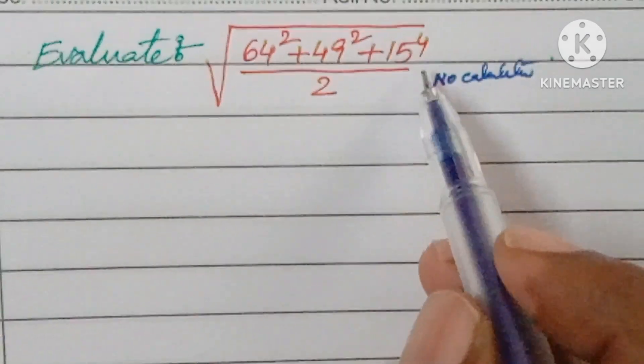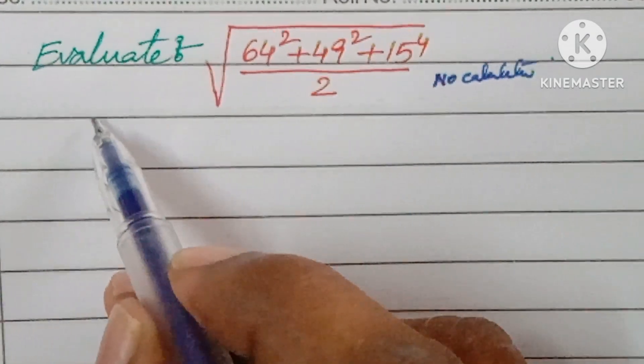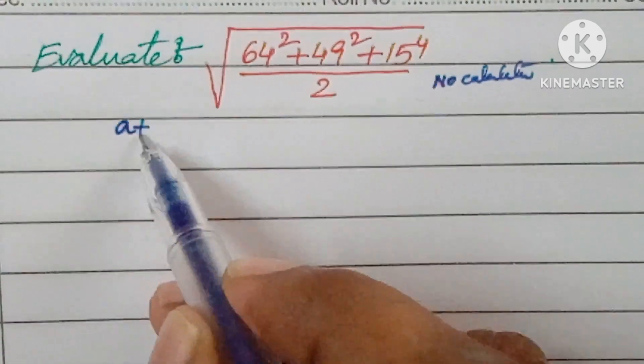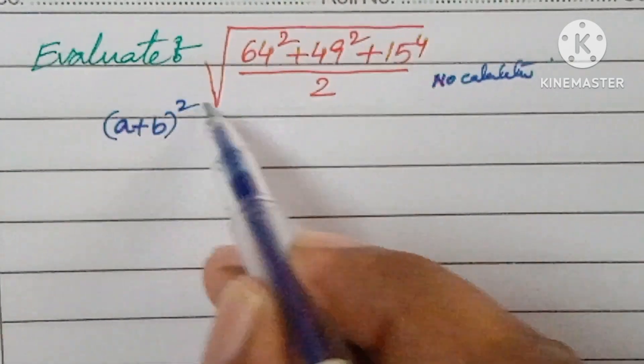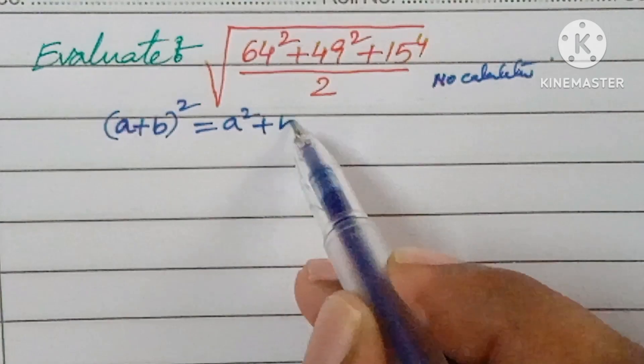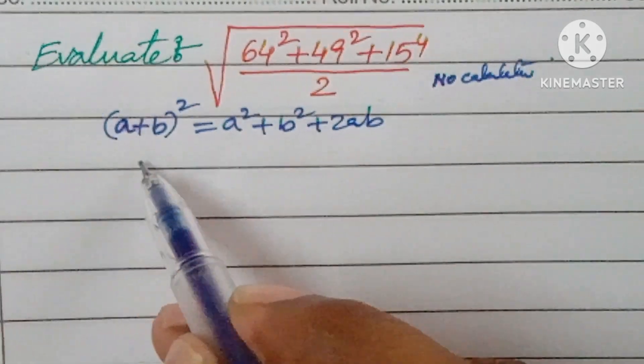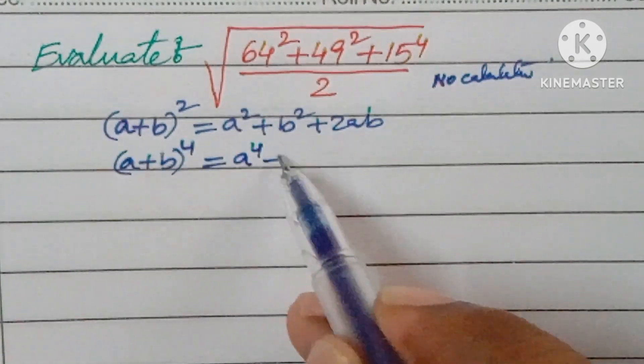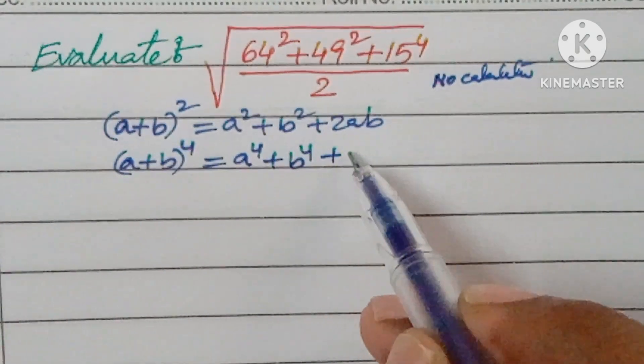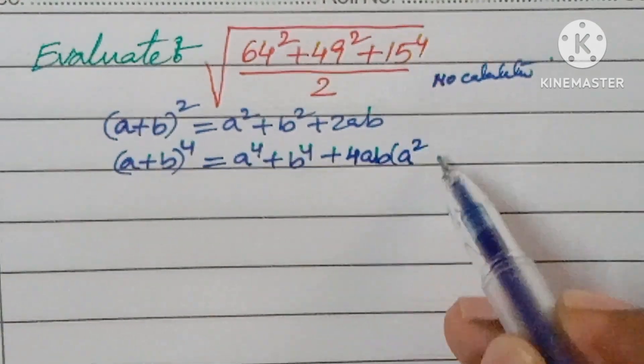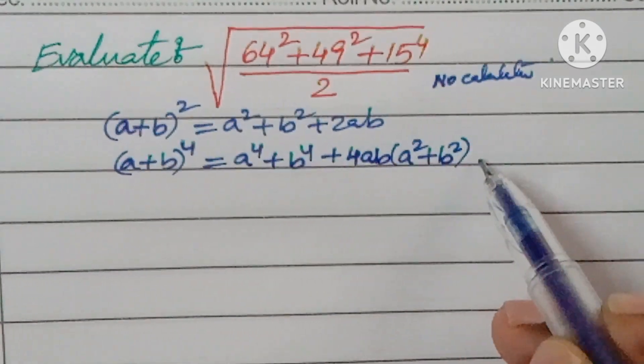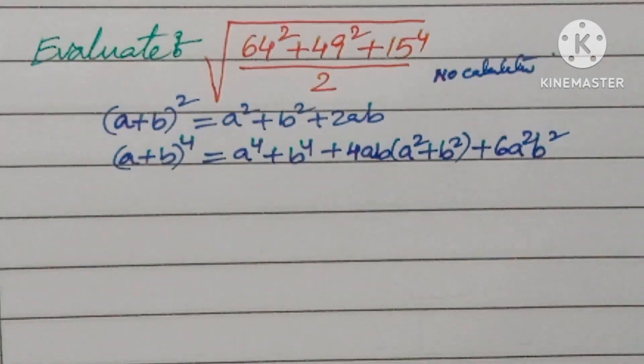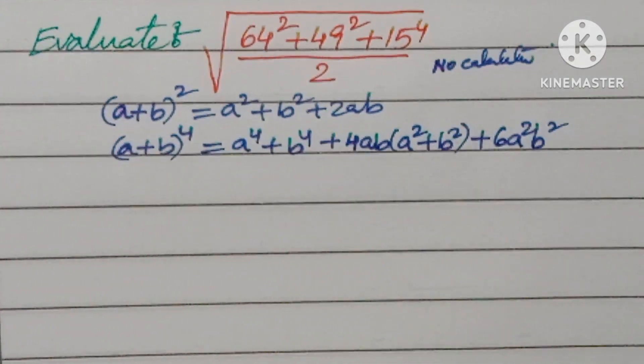Now how to solve this problem? Square root is given, squares are given. Before solving algebraically, you have to know some formulas. (a+b)² equals a² plus b² plus 2ab. (a+b)⁴ equals a⁴ plus b⁴ plus 4ab(a² plus b²) plus 6a²b².